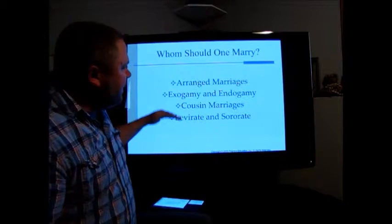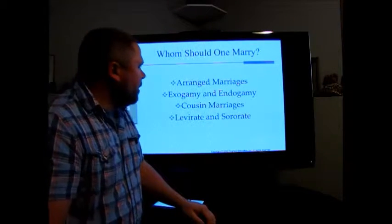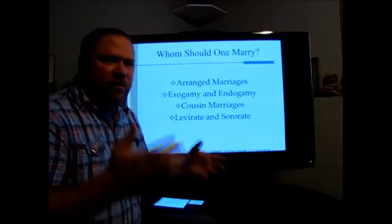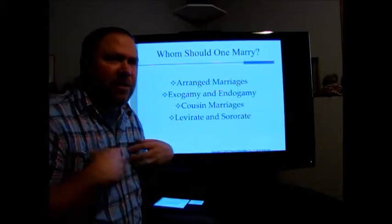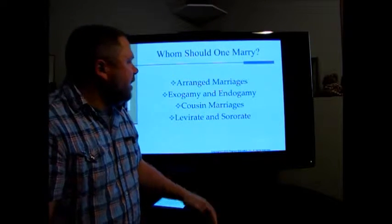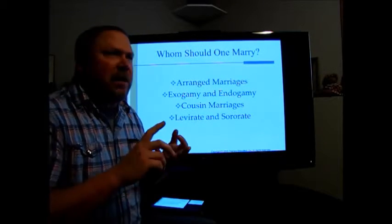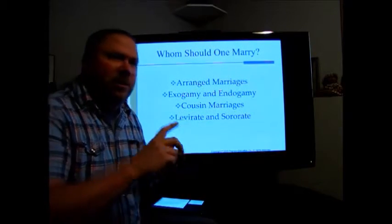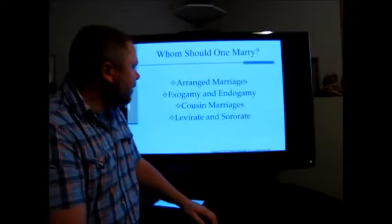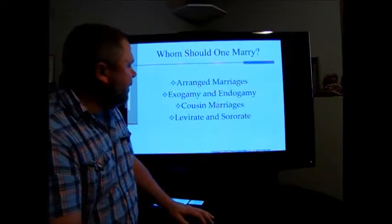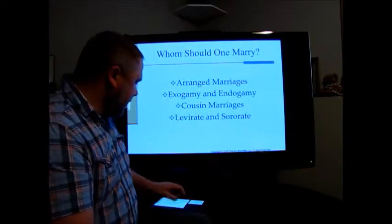Cousin marriages are more common in non-commercial, non-Western societies. These societies have different and more complex ways of defining who is related to them. The book talks about parallel cousins and cross cousins — sometimes it's okay to marry cross cousins but not parallel cousins, and vice versa. The levirate and sororate also have to do with marriage involving brothers and sisters.